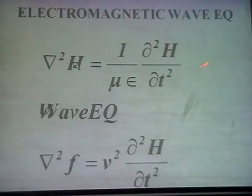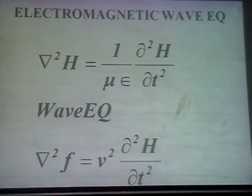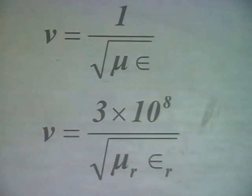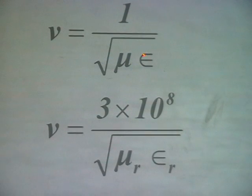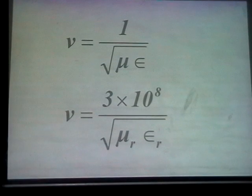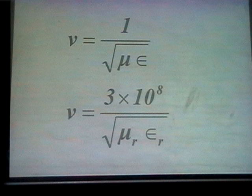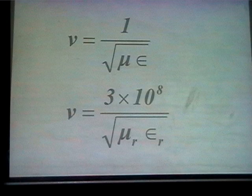Compare the electromagnetic wave equation with the standard wave equation from physics. If you compare the two, you get V² where V equals 1 divided by √(με), so V equals 1/√(με). Simplifying, V equals 3×10⁸ meters per second. For air, μᵣ = 1 and εᵣ = 1, so the velocity is 3×10⁸ m/s. Electromagnetic waves travel at the velocity of light.